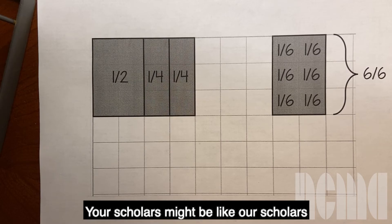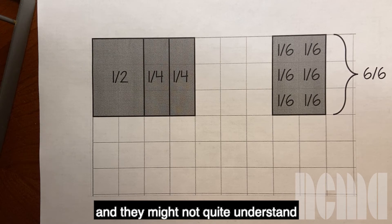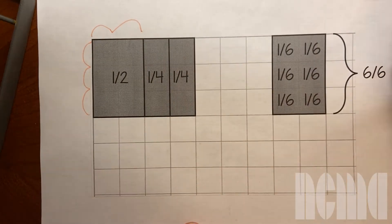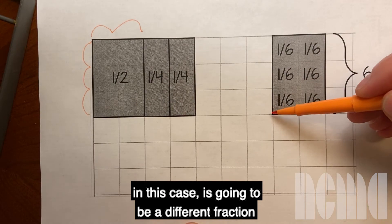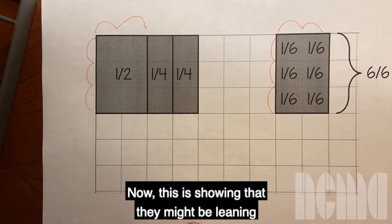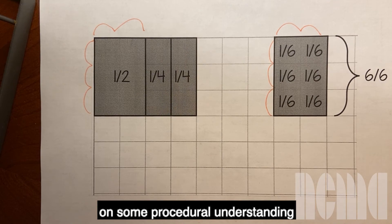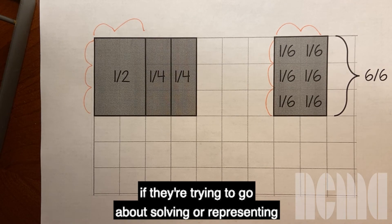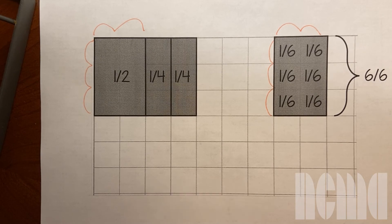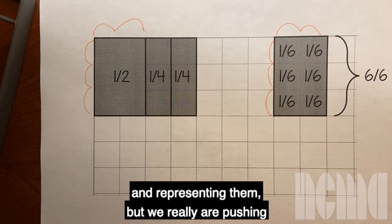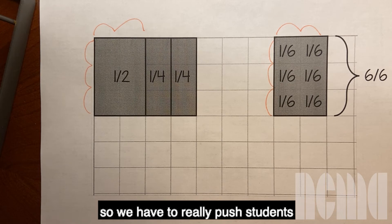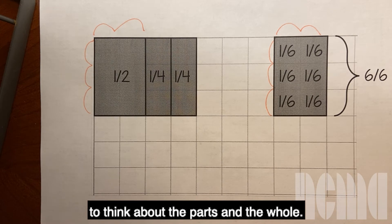Your scholars might be like our scholars and they might not quite understand why this three by two array in this case is going to be a different fraction than the three by two array over here. This is showing that they might be leaning on some procedural understanding if they're trying to go about solving or representing the parts in a procedural way using what they know already about fractions and representing them. But we really are pushing for a deep conceptual understanding of equivalent fractions here. So we have to really push students to think about the parts and the whole.